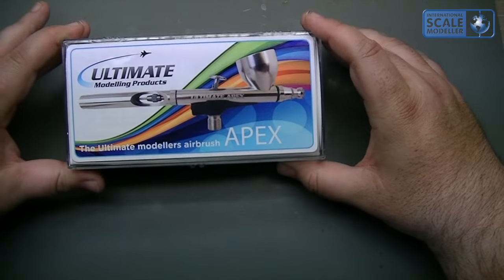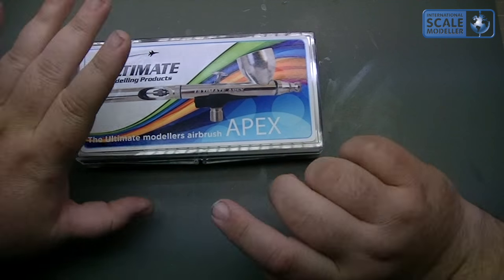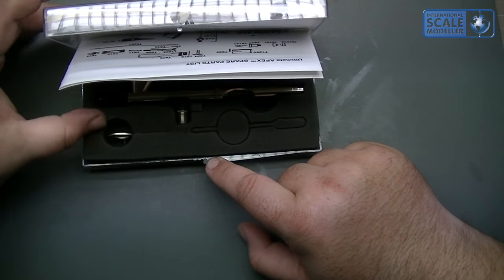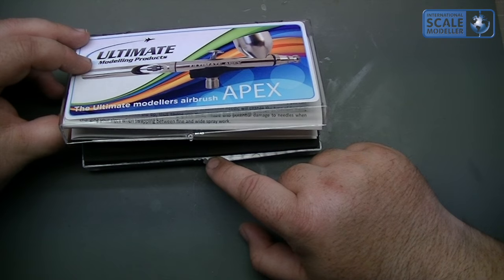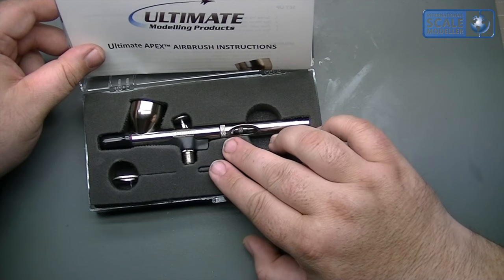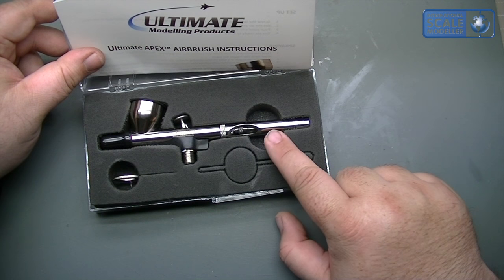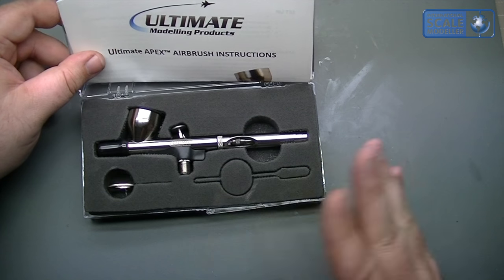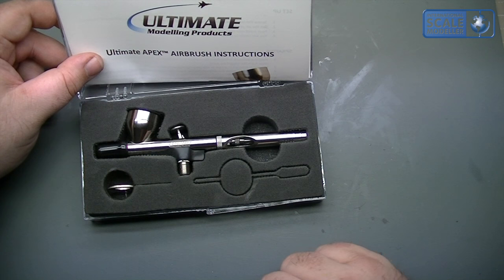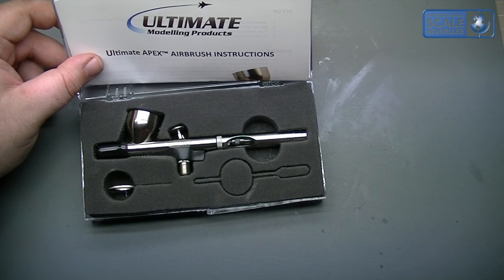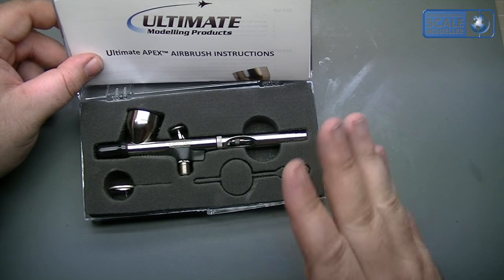Okay, so here we go. We've got a brand spanking new Apex that's ready to go to its new owner. We're not going to touch this one at all. I'm just going to show you it. So it comes in an attractive case with its full instructions in there, with its spanner, color cup, needle protector, and the airbrush itself. Each one of these airbrushes is fully stripped, cleaned, lubed, and set up by myself before it goes out. And I promise I do every single one.